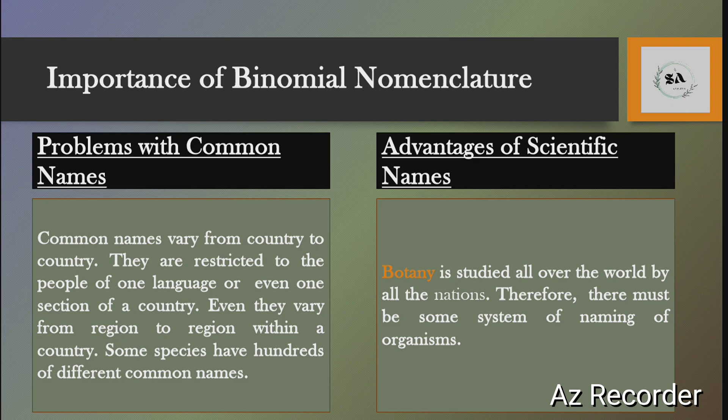In this topic we study problems with common names versus advantages of scientific names. The first problem with the common name is that common names vary from country to country. They are restricted to the people of one language, or even one section of a country, and languages vary from region to region within a country. So it is very difficult for a single person to remember so many names of a single plant. Some species have hundreds of different common names.